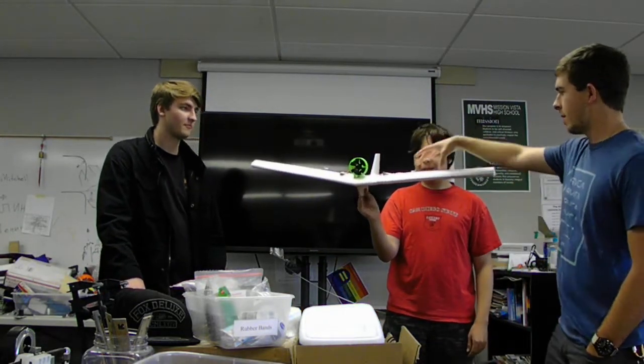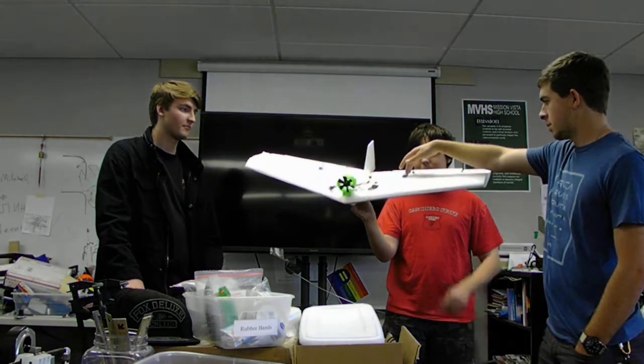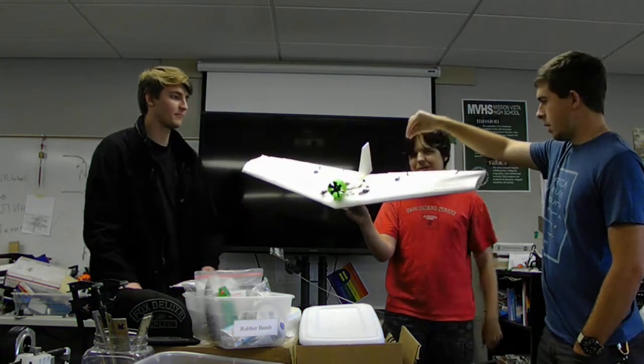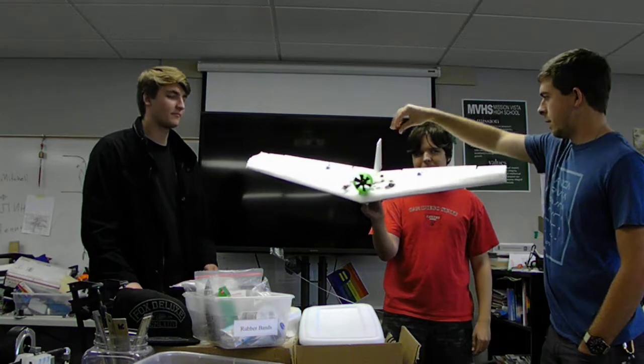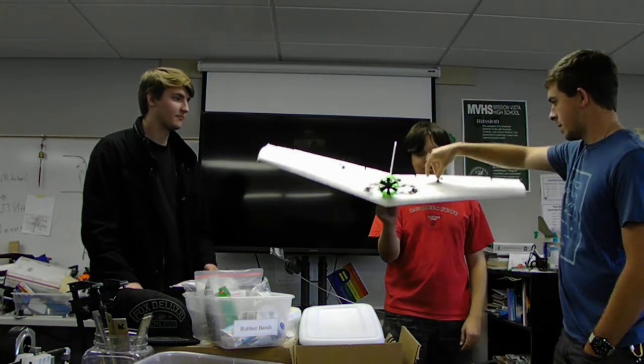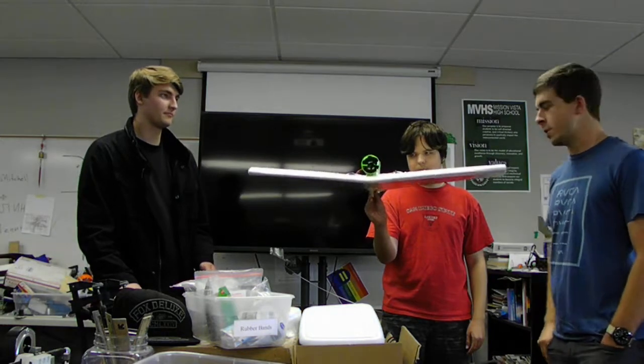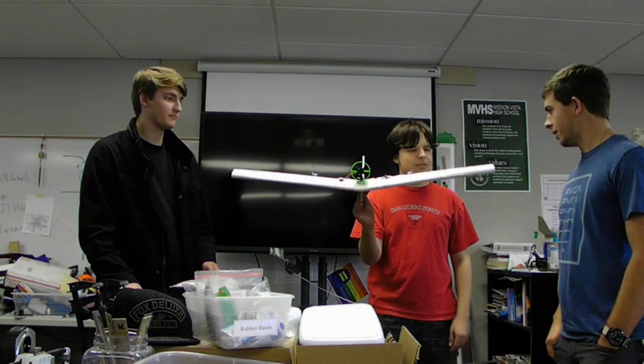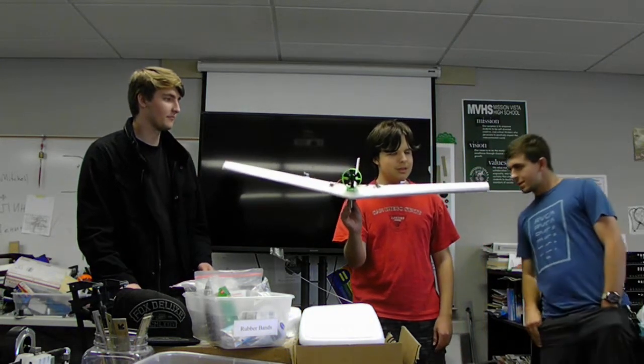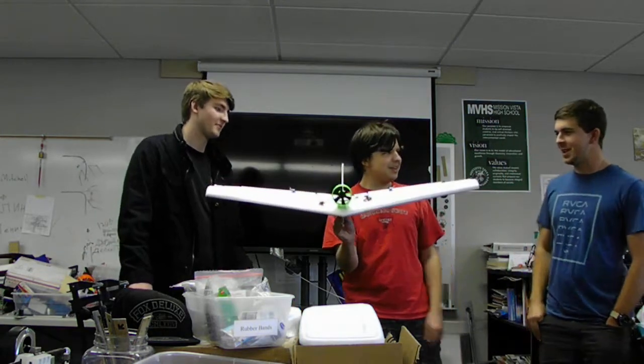We also did the same thing with the soldering iron with the servos. We sort of cut these square holes in the wing and sort of shaved down so that we could get the servos in there and increase the aerodynamics and make it smooth and all that stuff. We have elevons.